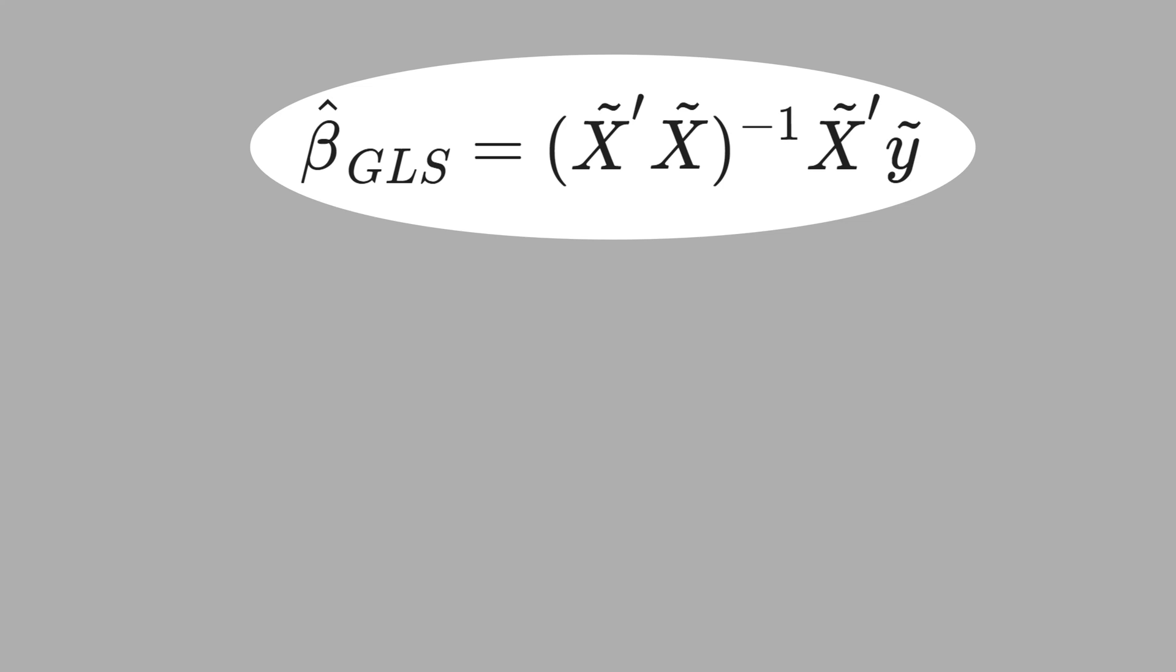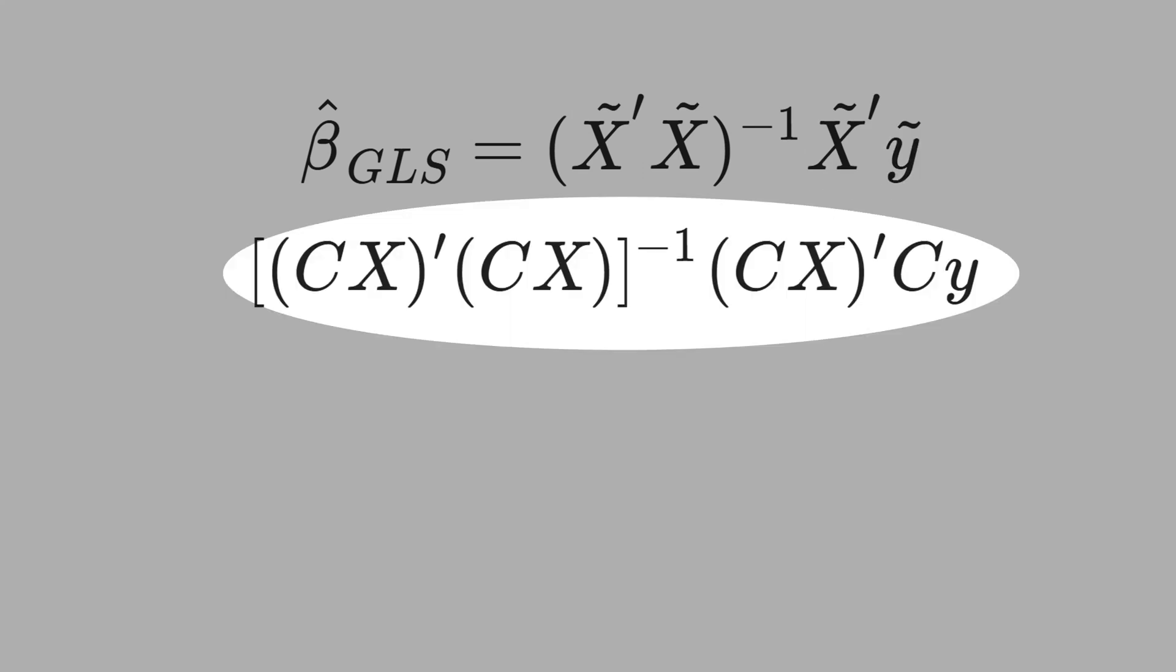Now, let's write the formula for beta hat of generalized least-square. The difference from ordinary least-square is that now we have X tilde here, X tilde, and Y tilde, instead of Y. Here, in the second line, we replace X tilde by CX, and Y tilde by CY.